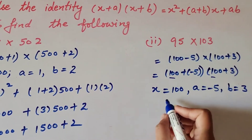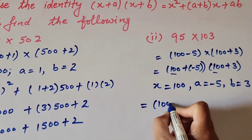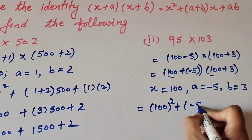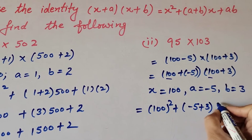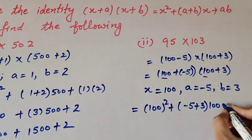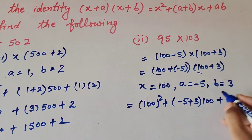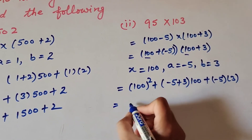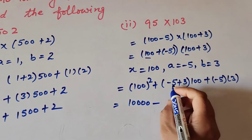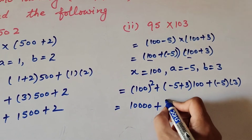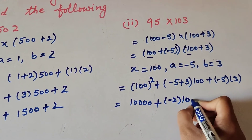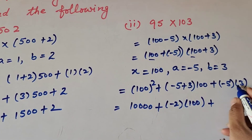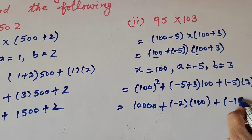Now we put these values into the given identity: x² + (a + b)x + ab. It equals 100² + (−5 + 3) × 100 + (−5 × 3). So 100² = 100 × 100 = 10,000. Then (−5 + 3) = −2 into 100 = −200. And −5 × 3 = −15.